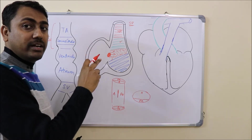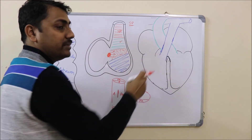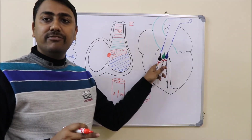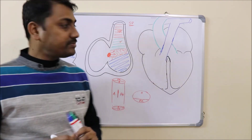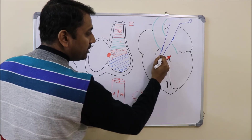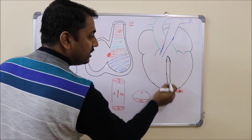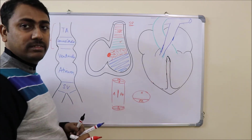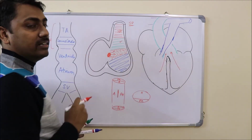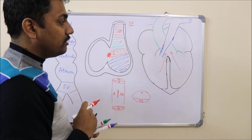Since the conal septum divides the outflow tract of both ventricles, pulmonary stenosis occurs more at the level of the infundibulum — therefore it is always written in brackets as infundibular stenosis, because the stenosis is happening at the level of the infundibulum of the right ventricle. The pulmonary artery becomes stenosed and narrowed, and the aorta has become so huge that it is now overriding the interventricular septum and draining the right side as well. This is known as overriding of the aorta, or dextral position of the aorta.